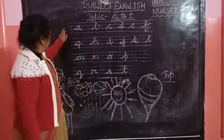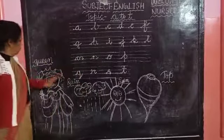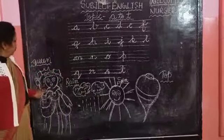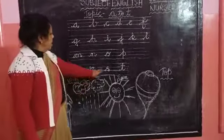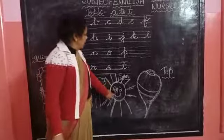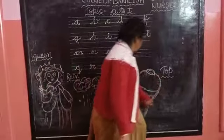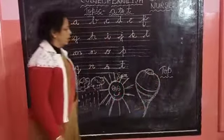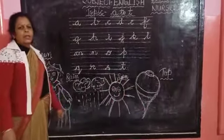Now you see it. Q for queen, R for red, S for sun, T for top. Okay, after your work, have a nice day. Thank you.